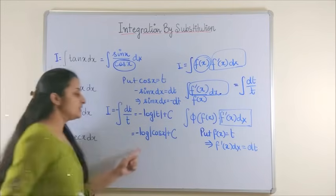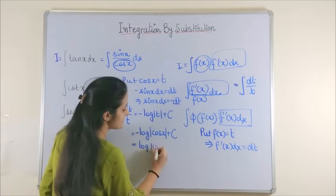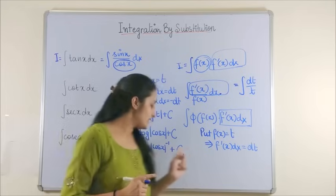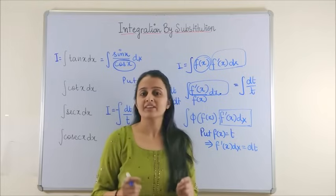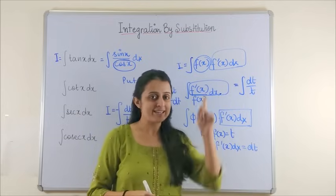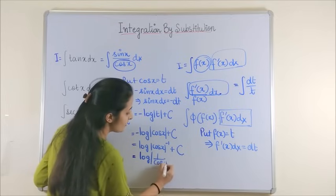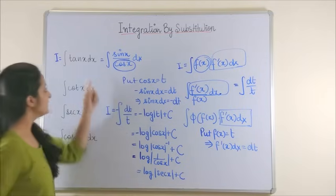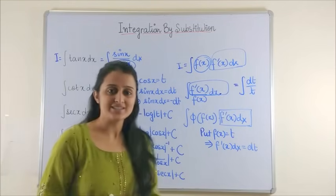We know that the integral of 1/t dt is log|t| + c, so we get minus log|cos x| + c. Taking the minus sign inside using log properties — refer to the logarithmic differentiation video linked in the description — this becomes log(1/cos x) + c, which is log|sec x| + c. So the integral of tan x is conveniently remembered as log|sec x| + c.